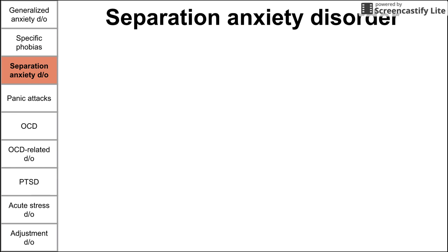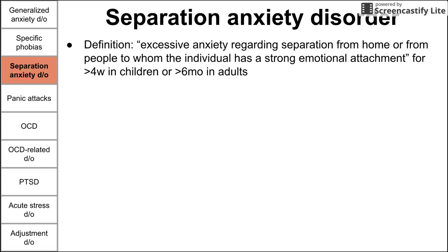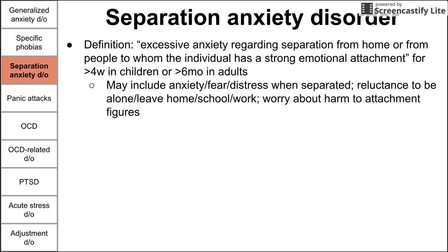Next is separation anxiety disorder. This is excessive anxiety regarding separation from home or from people to whom an individual has a strong emotional attachment. In children, it's diagnosed when it occurs for over four weeks; in adults, it needs to occur for over six months. Separation anxiety may include fear and distress when separated, reluctance to leave home, work, or school, or worry about harm to the attachment figure — for example, a child overly worried about their mom getting hurt.